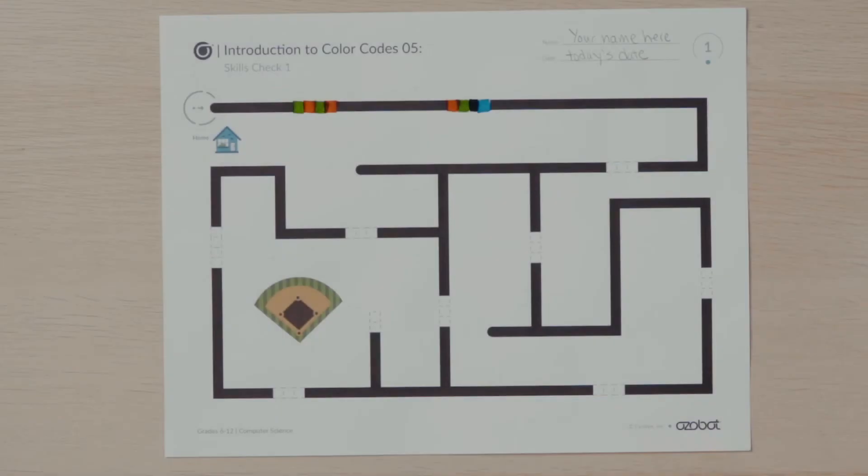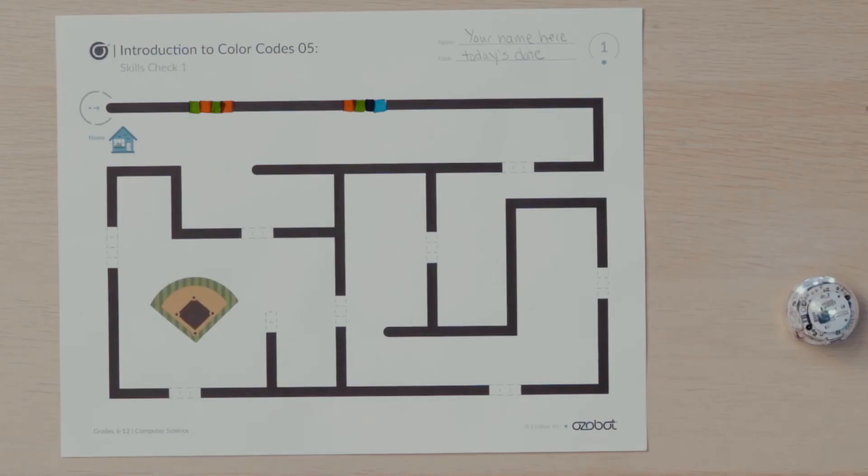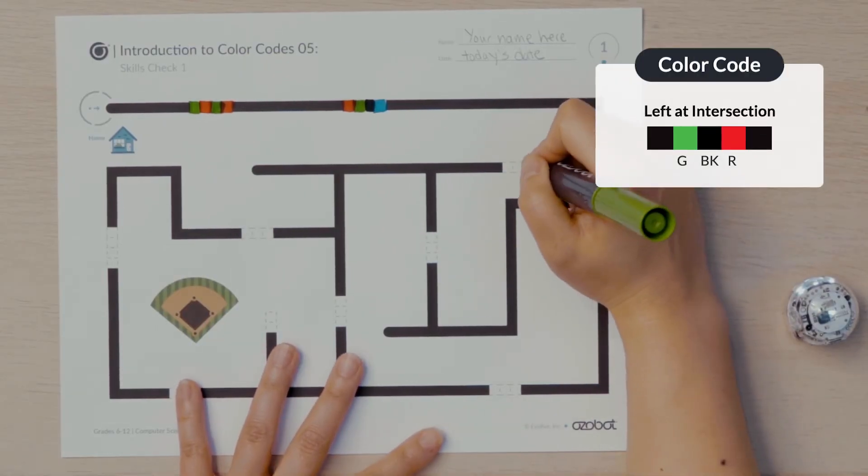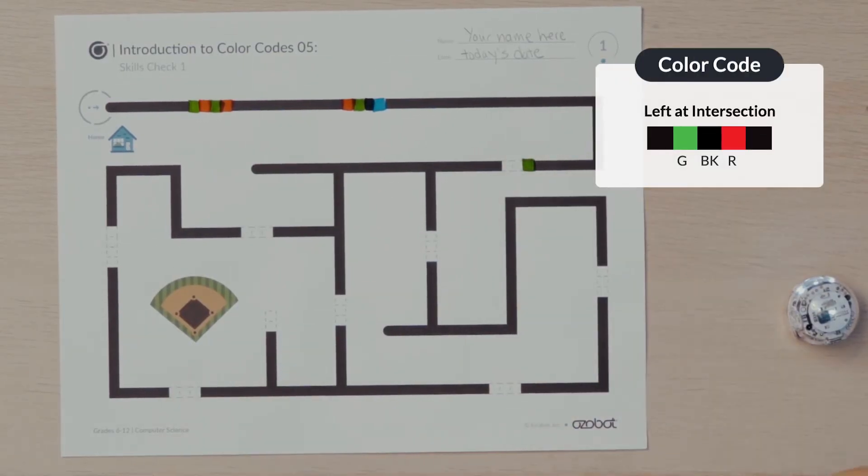As you continue along the maze, you will come to another color code space followed by an intersection. Which way does Ozobot need to go to continue on the maze? Take a moment to look carefully. If Ozobot goes straight, it will come to another intersection, but there is no space for a color code to tell it which way to go. If Ozobot turns left, it will continue on with the maze. I'll fill in the left at intersection code, which is green, black, red.